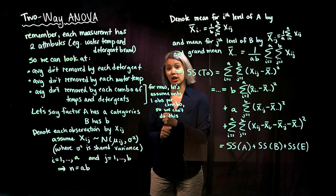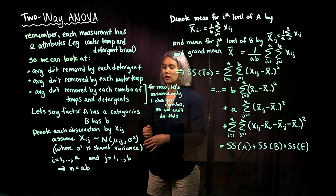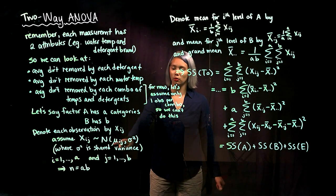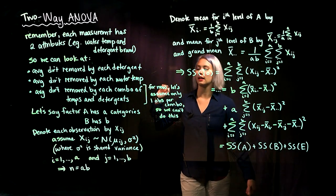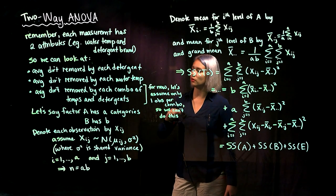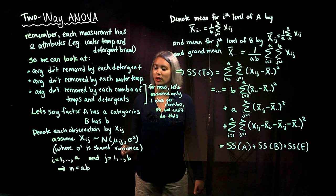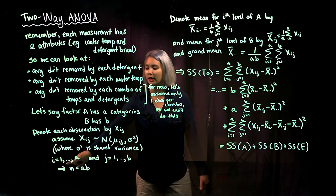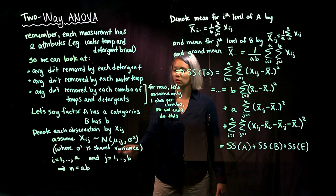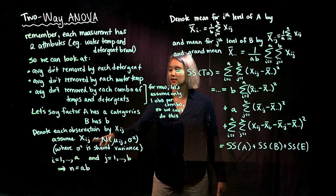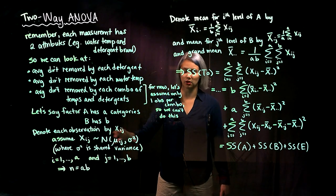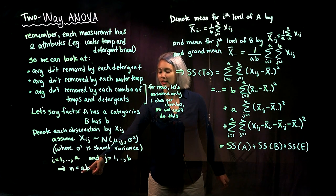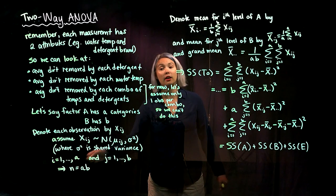We're going to denote each observation by Xᵢⱼ. We assume Xᵢⱼ has a normal distribution with mean μᵢⱼ and variance σ². Just like in one-way ANOVA, we assume σ² is a shared variance. We have one observation per combo, so i goes from 1 through A and j goes from 1 through B. The first subscript i is for Factor A, and the second subscript j is for Factor B. Since we have one observation per combo, the total sample size is A times B.